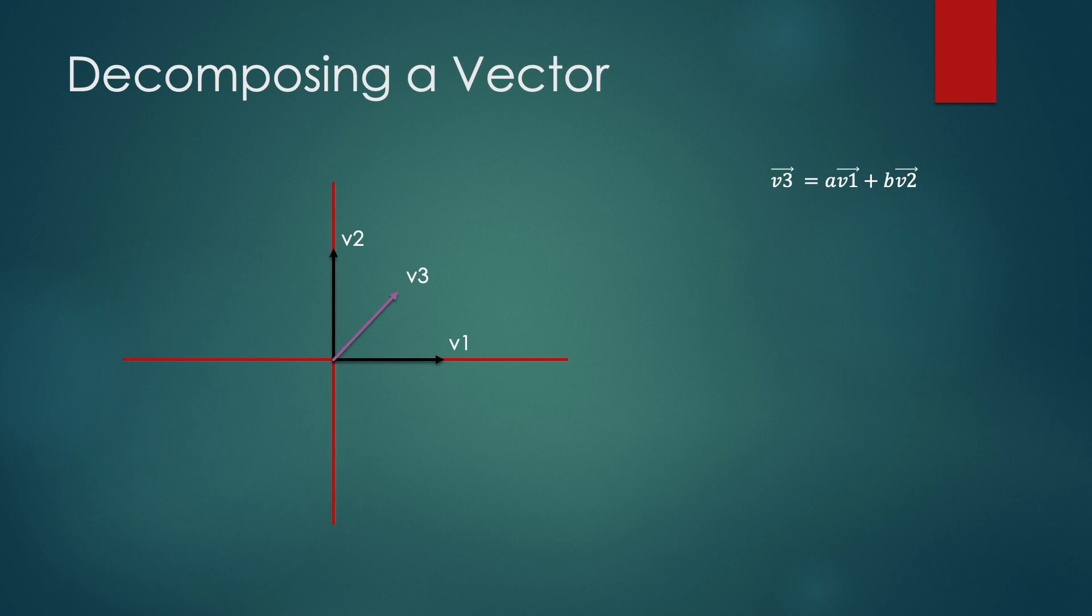And so if we wanted to solve for a, we could take the dot product of both sides with v1, and that would get rid of the bv2 term. And vice versa, if we wanted to solve for b, we would take the dot product of both sides with v2. So doing v1 first, we take the dot product with v1 on both sides, and that will make the b term go away because v2 dot v1 is zero, and we can solve for a.